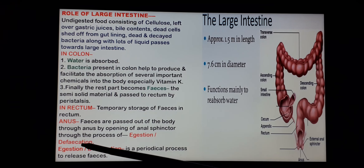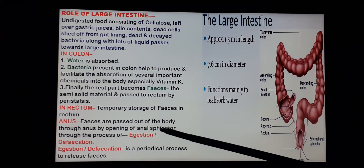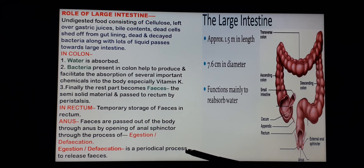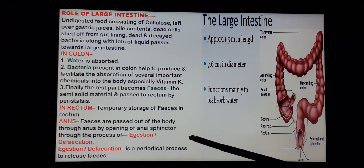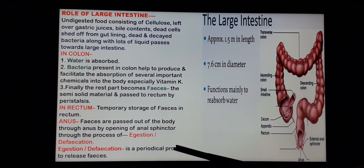Students, egestion and defecation is actually a periodic process for eliminating all the undigested waste in the form of fecal matter. This brings us to the end of the phases of nutrition. We have already discussed ingestion and digestion in the previous videos, and today we have discussed absorption, assimilation and egestion. Please go through the video carefully and revise all the other three videos so that you are able to understand the whole phenomenon of nutrition as one process. Thank you.